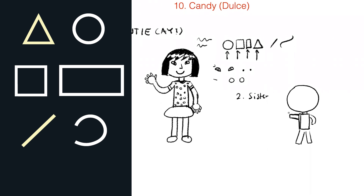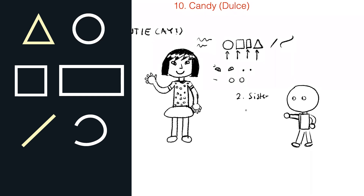How should we draw the feet and hands? Ovals. What shape should we use for the eyes? We can do circles and dots. For the nose, we can do a curved line, a triangle-like shape, or a backwards L. Do the L. And then how should we draw the mouth? A curved line — you can also do two curved lines.